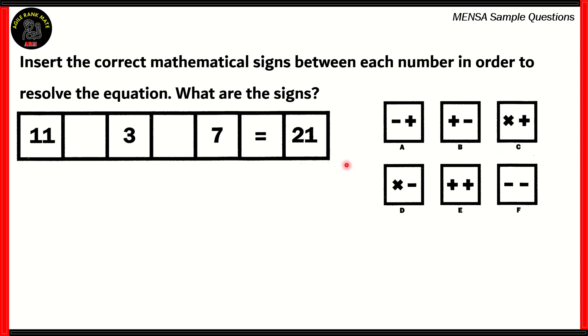So how do we solve this question? Well this is one of those simple questions where you can just plug in the signs and then see if it works. So for option A, it'll be 11 minus 3 plus 7. 11 minus 3 gives you 8. 8 plus 7 gives you 15, which is not equal to 21. So A is not the right one. What about B? For B, the order is inverted. So what we get is 11 plus 3, 14. 14 minus 7 gives you 7. Again, the wrong answer.